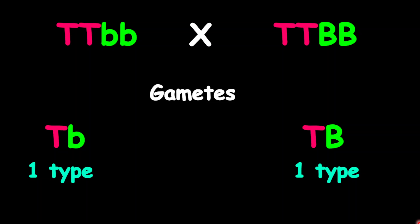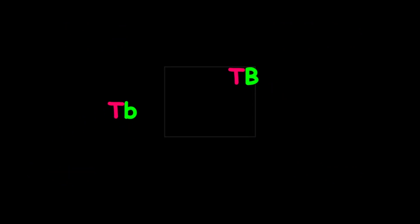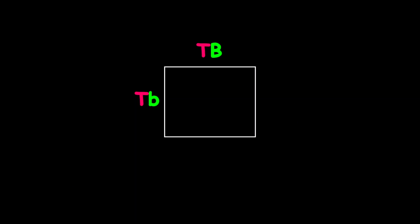A Punnett Square does not need to be 16 or four-by-four — it could simply be just one box. This will be our result, which means the genotype for the offspring is homozygous dominant for one trait and heterozygous dominant for the other trait.